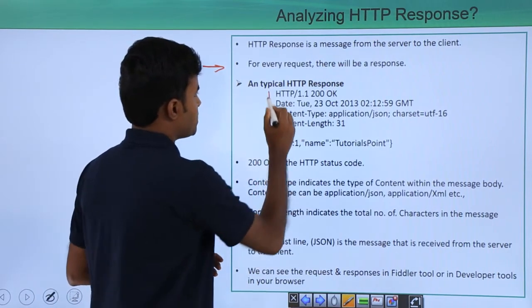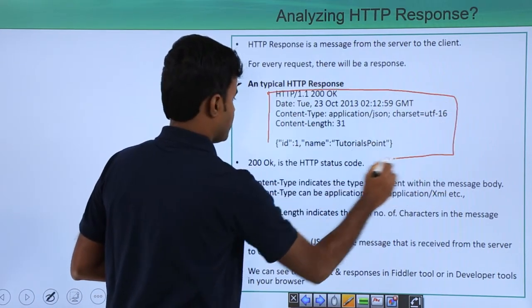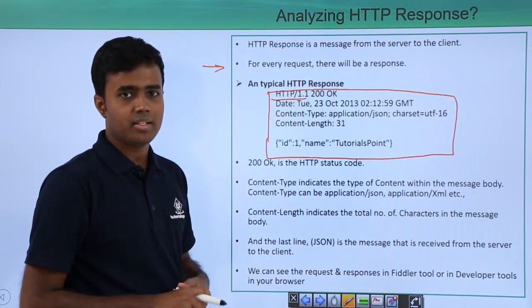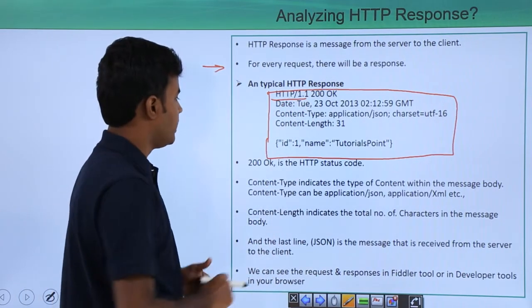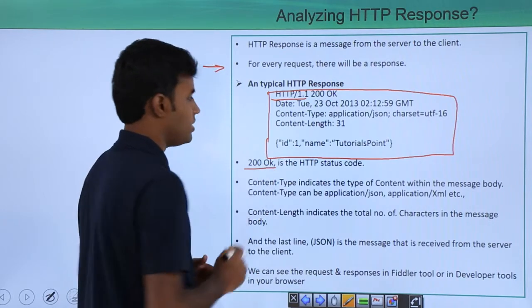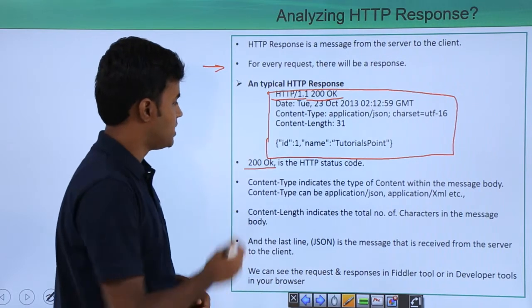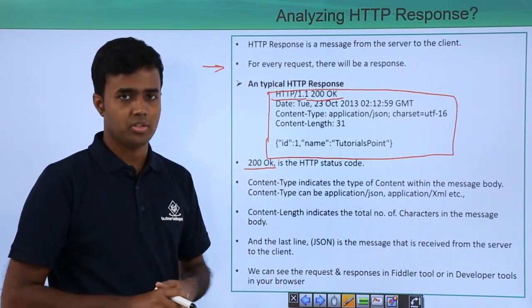This is a typical HTTP response. HTTP 1.1 indicates that HTTP specification. It returns with a 200 OK, which is the HTTP status code, which is over here. And we will see more about the status codes in the next video tutorials.